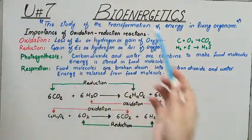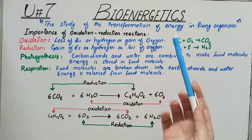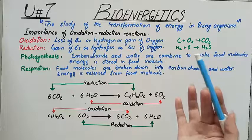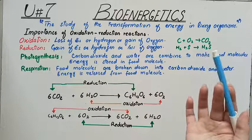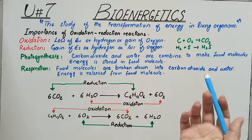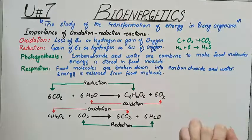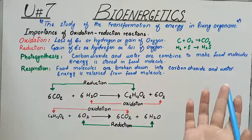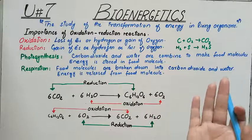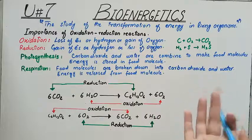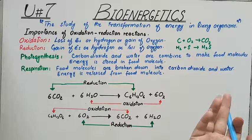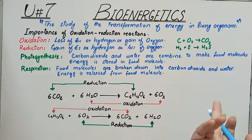Before bioenergetics, you know very well that there are many activities inside the living organism. A living organism performs many activities in its body — these include cell division, respiration, growth, irritability, etc. All these activities are possible because of chemical reactions occurring in the body, which we collectively call metabolism. Metabolism is of two types: anabolism and catabolism. Some reactions require energy while others release energy.